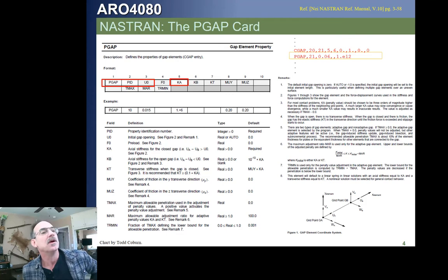That's going to be pretty simple. We'll see in this little example up here, we have a CGAP card with ID 20, which uses PGAP card 21. It attaches two nodes, five and six,